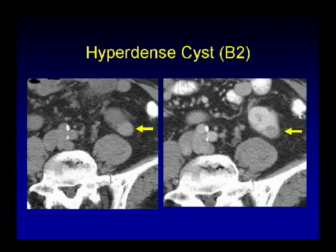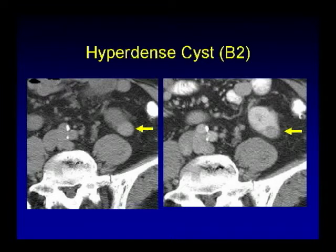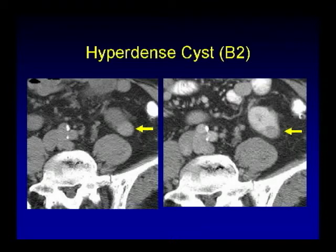Here's another example: an intrinsically dense lesion from the left kidney on the non-contrast scan, and on the post-contrast scan there's no obvious enhancement. This is a hyperdense cyst, less than 3 cm — again Bosniak 2, benign.